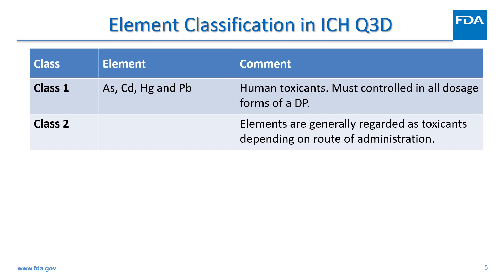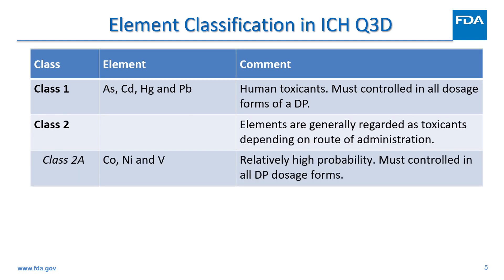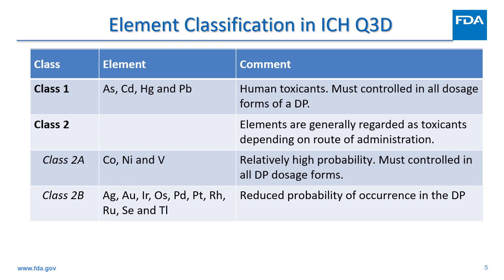The Class 2 elements are generally considered as route-dependent human toxicants. They are further divided into subclasses 2A and 2B based on their relative likelihood of occurrence in the drug product. Cobalt, nickel, and vanadium belong to Class 2A elements. They have a relatively high probability of occurrence in the drug product, and thus require risk assessment in all routes of administration. The 10 elements in Class 2B have a reduced probability of occurrence in the drug product, related to their low abundance and low potential to be co-isolated with other materials. They may be excluded from the risk assessment unless they are intentionally added during the manufacture of drug substances, excipients, or other components of the drug product.